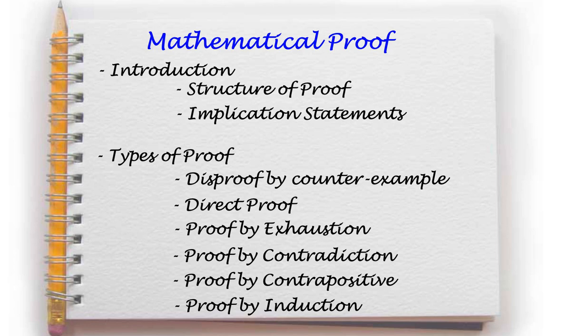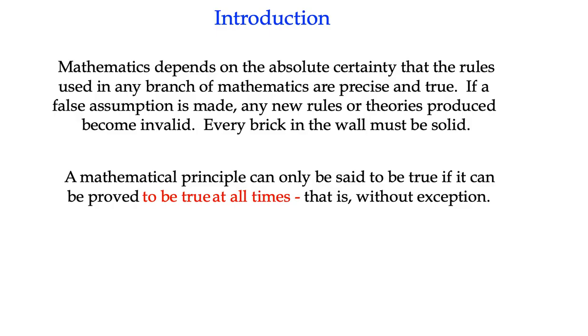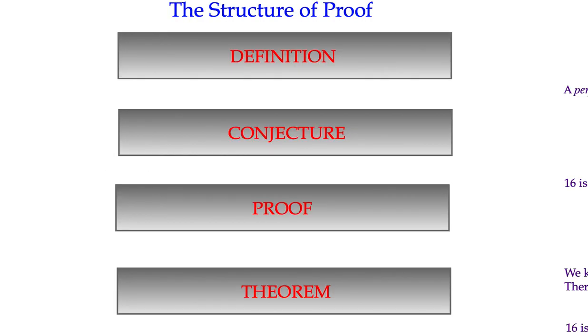First of all, a bit of the idea of the structure of proof. So proof is a really important idea in mathematics. You can have a formula, you can say, well, look, this rule works pretty much every time I consider a situation. But unless you've considered every situation, it won't be accepted mathematically as a true thing. So how do we work this idea that something is true at all times without exception? First of all, let's have a look at the structure of what a proof might look like.